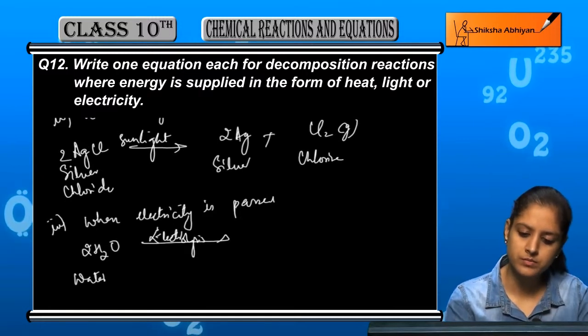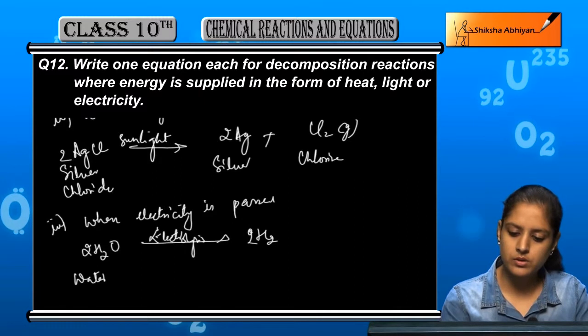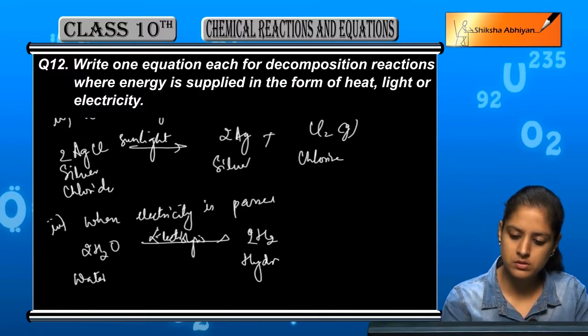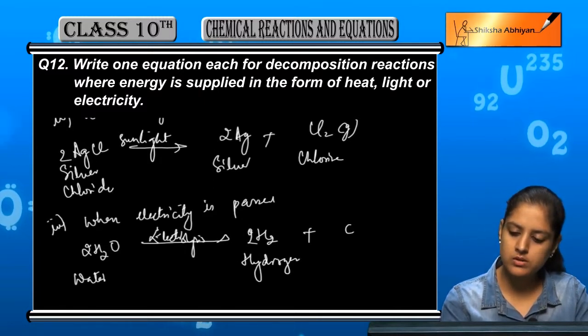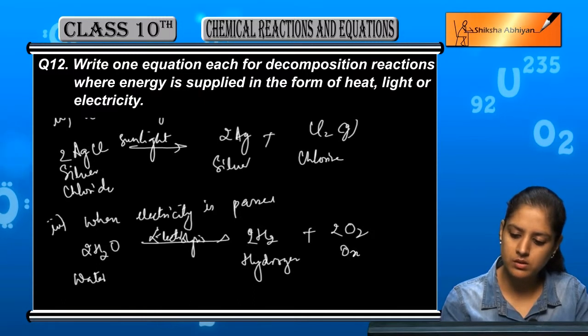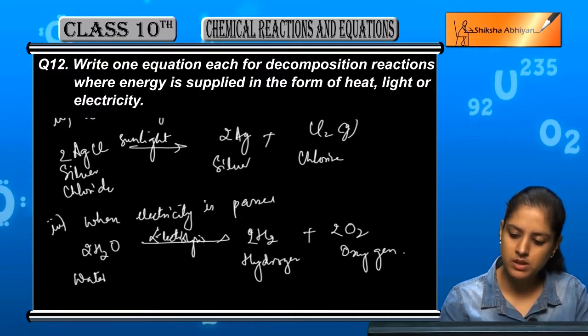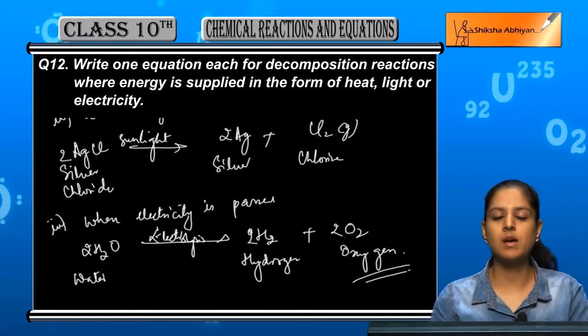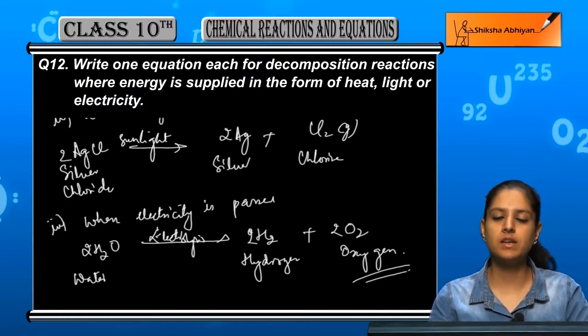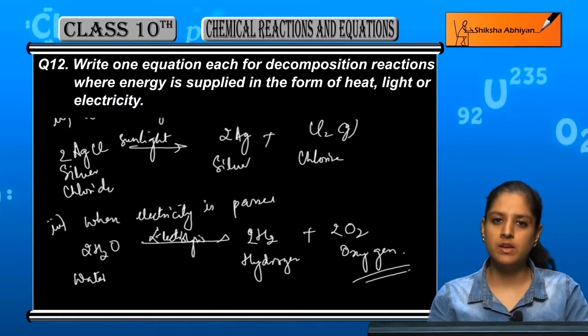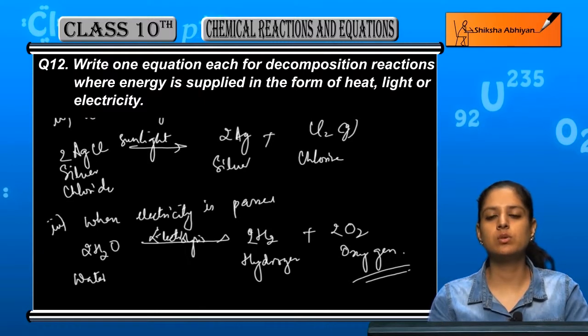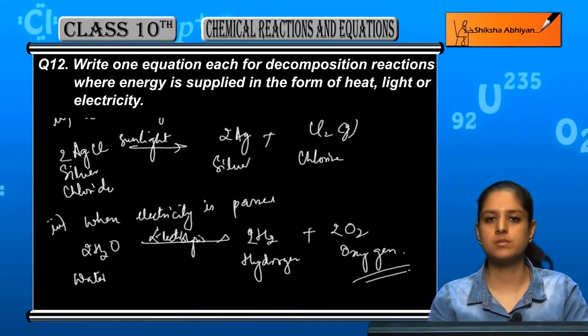Hydrogen and oxygen will form. So these are the three examples of heat, light, and electricity being given to the reactant to decompose into their simpler substances. That is it.